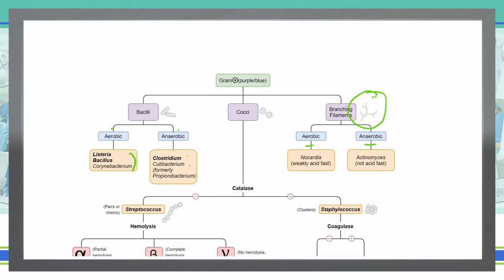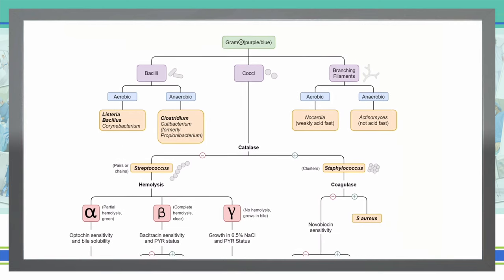If a gram-positive branching filament is aerobic, then we know it is nocardia, or weakly acid-fast. If it is anaerobic, then it's not going to be acid-fast, and that will be actinomyces. So let's come back here and look at our cocci.